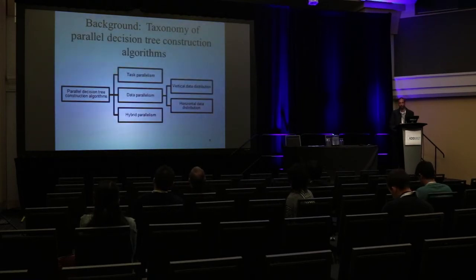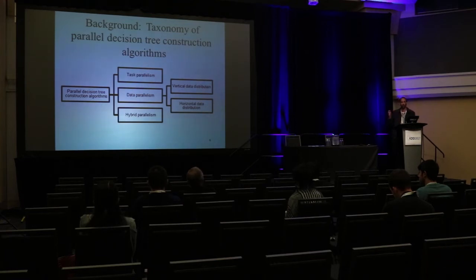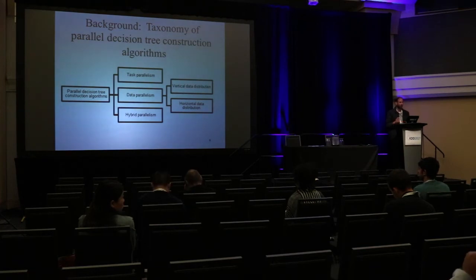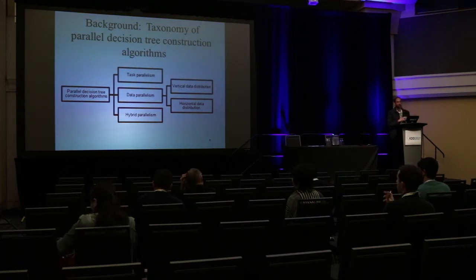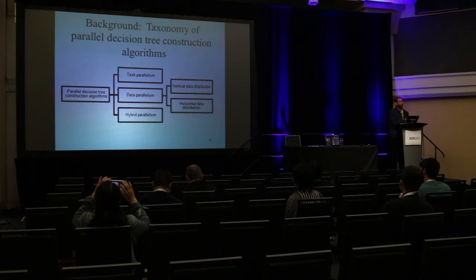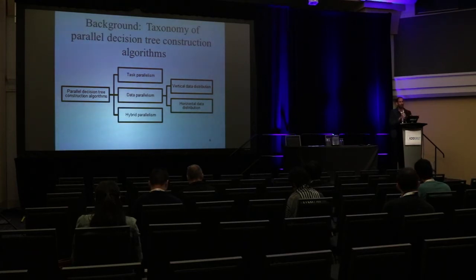We can taxonomize parallel decisions into two different ways: task parallelism and data parallelism. Task parallelism means each CPU deals with a specific processing problem, while data parallelism means we shard the data into different CPUs. The hybridization is a mixture of both. The core of big data processing is to parallelize and shard all the data into different CPUs, and then there is a reduce phase of taking all these pieces and putting them together.